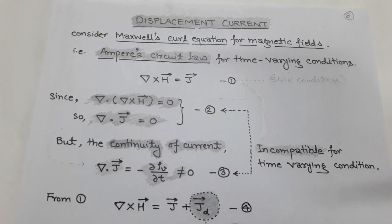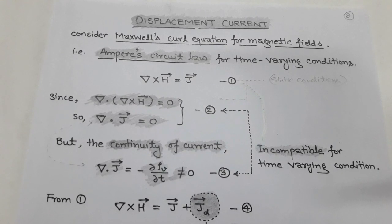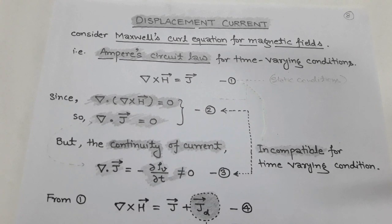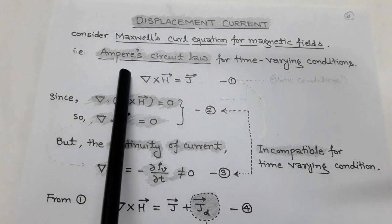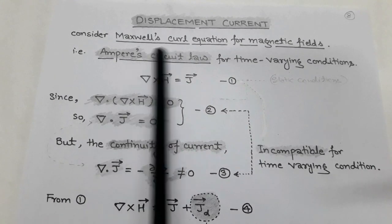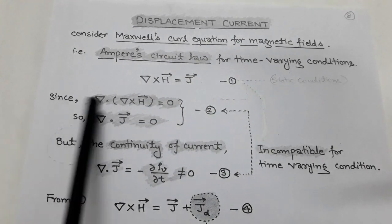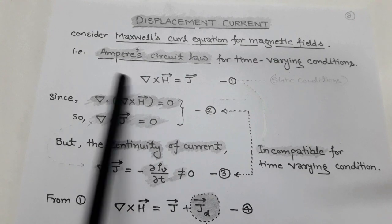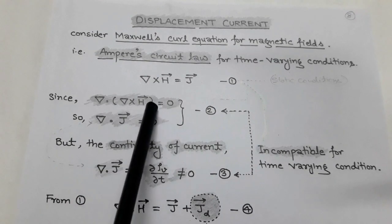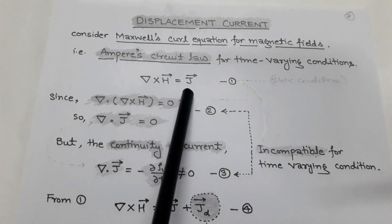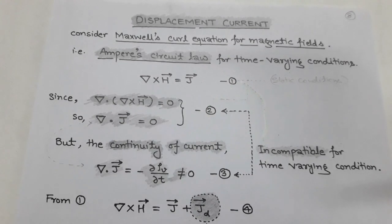The topic is displacement current. As we are discussing time-varying fields, in case of time-varying fields, there is a displacement current. For this, we consider Maxwell's curl equation for magnetic field, that is called Ampere's circuital law. For static condition, Ampere's circuital law is denoted by curl of H vector equals to J vector.